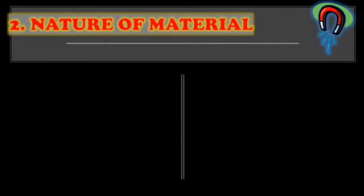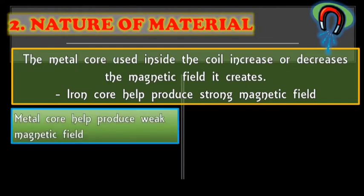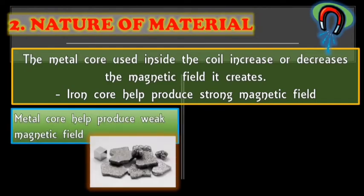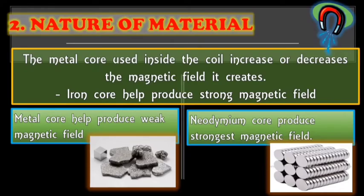Number two factors is the nature of a material. This refers to the nail that will be used. The metal core used inside the coil increase or decreases the magnetic field it creates. Iron core help produce a strong magnetic field. The metal core help produce weak magnetic field. While neodymium core produce strongest magnetic field. This is the example of neodymium core, which produces the strongest magnetic field.